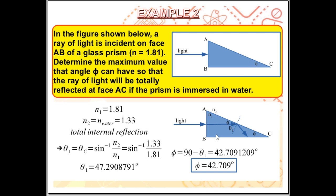Using the equation for total internal reflection, theta_c equals the inverse sine of n2 over n1. Knowing n2 = 1.33 and n1 = 1.81, we calculate the critical angle theta_c to be 47.291 degrees. Total internal reflection can happen here because n1 is greater than n2, which is one of the required conditions. The fact that we obtained a valid answer confirms that total internal reflection is indeed possible for this system.